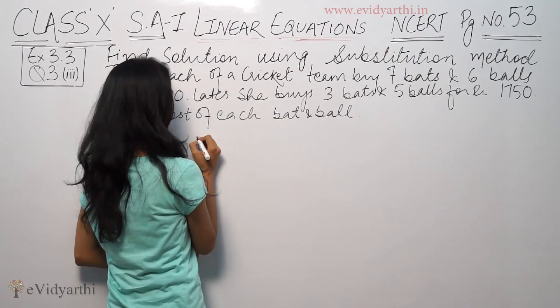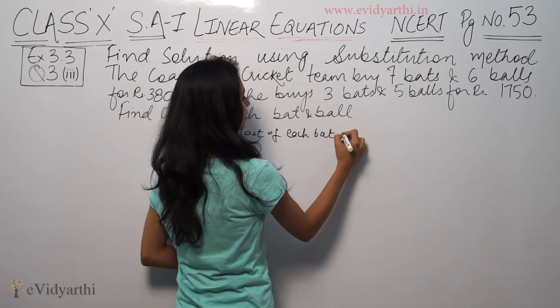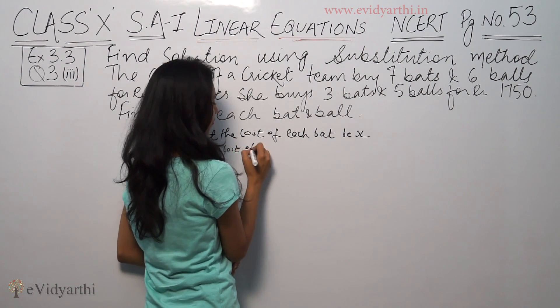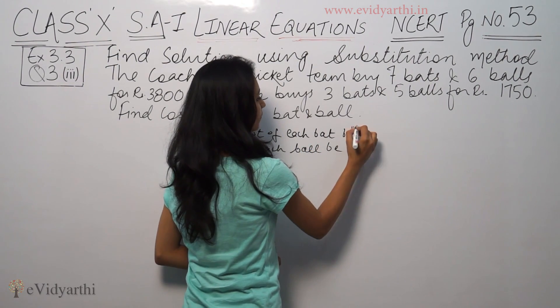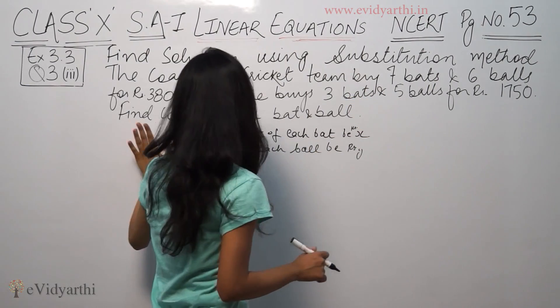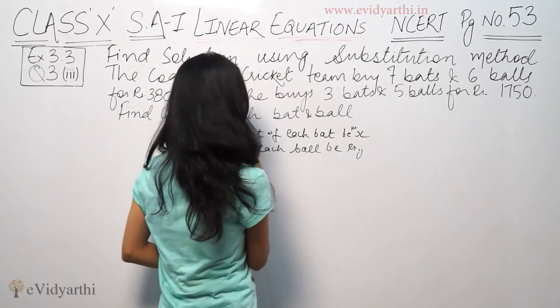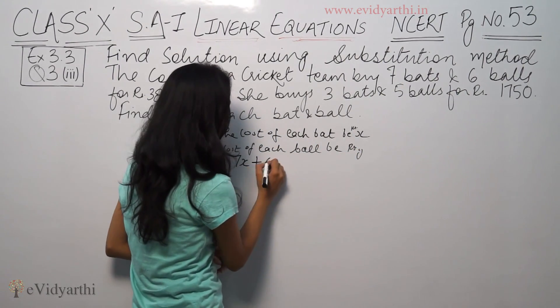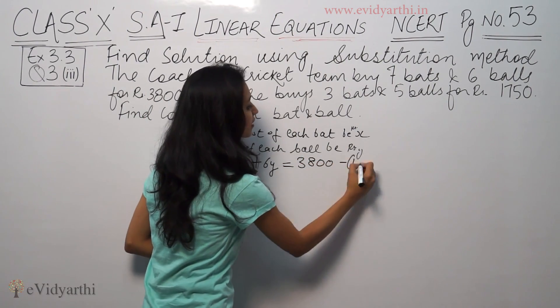So let the cost of each bat be x and the cost of each ball be y. First equation is: the coach buys 7 bats and 6 balls for rupees 3800. So 7 bats cost 7x, and 6 balls cost 6y. So 7x plus 6y equals 3800.